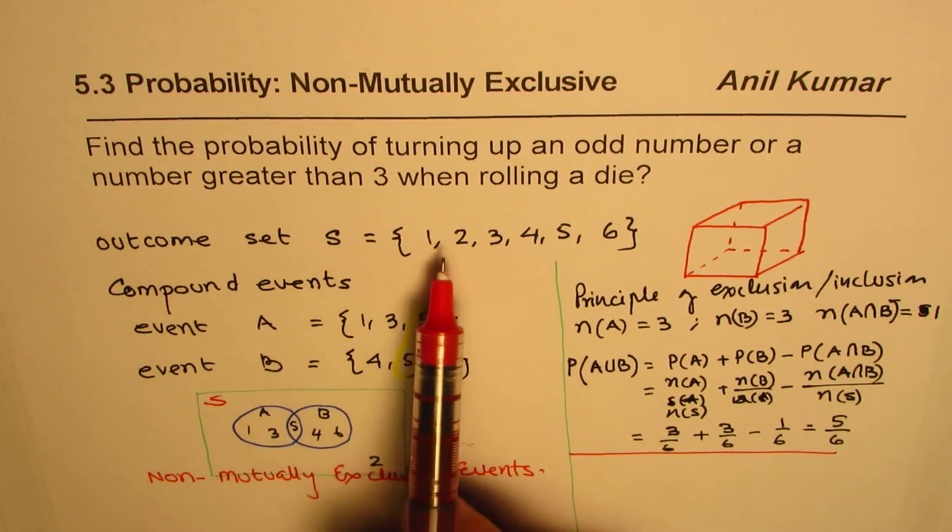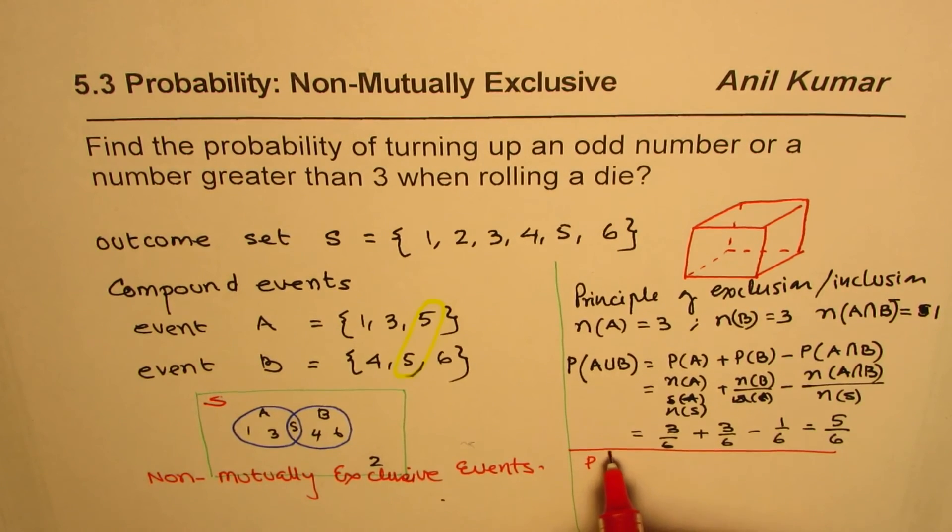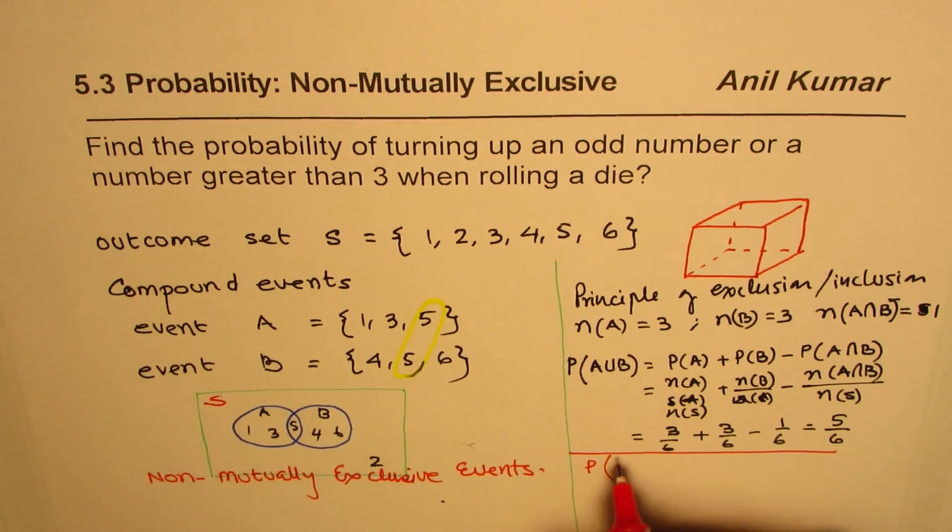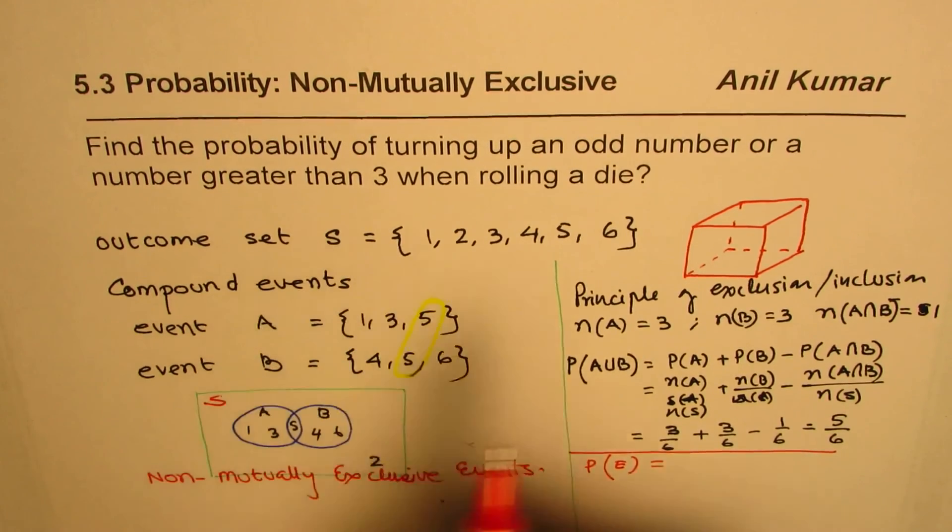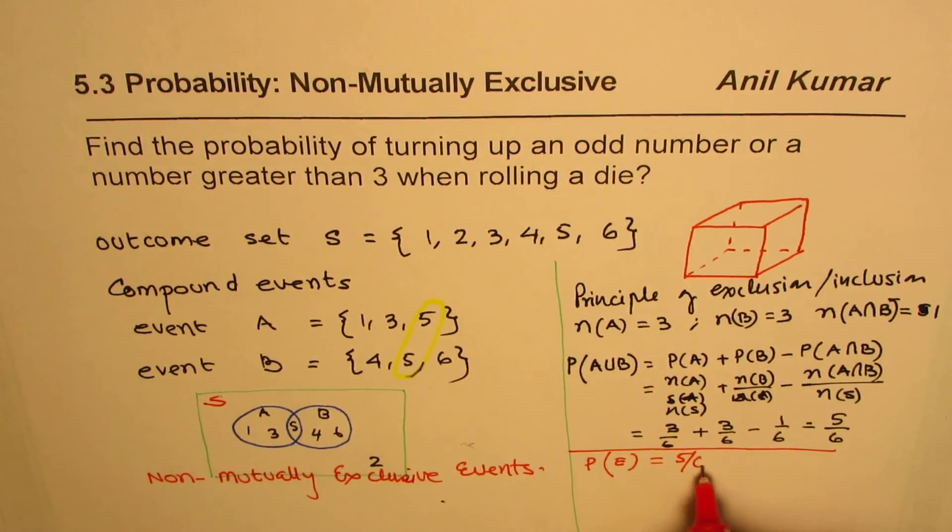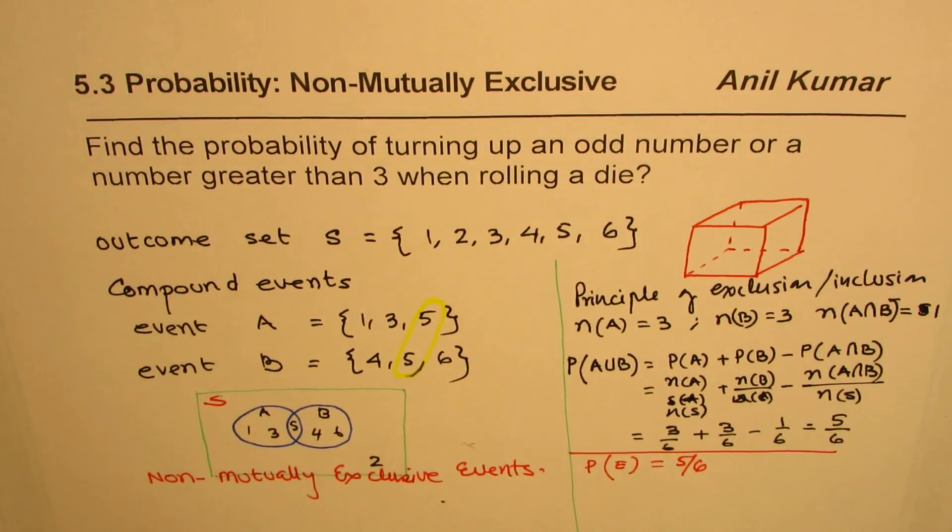And in the outcome set, we have 6 elements. So the probability for the given event, let me call this event as E, will be, which is combination of these two, will be 5 over 6, right? So we could have done from here also.